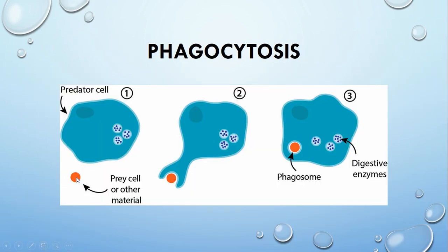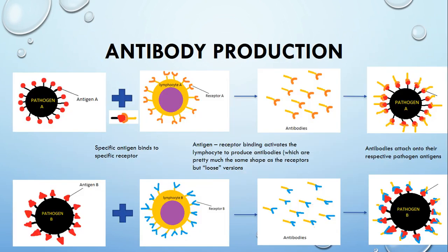In phagocytosis, the phagocyte extends its membrane and engulfs the target cell to form a vesicle called a phagosome that contains the cell. Pockets of digestive enzymes then fuse with this phagosome, and those enzymes destroy the cell; the fragments are later released out of the phagocyte. This is definitely something you need to understand perfectly, as it will come up many times in the coming years.